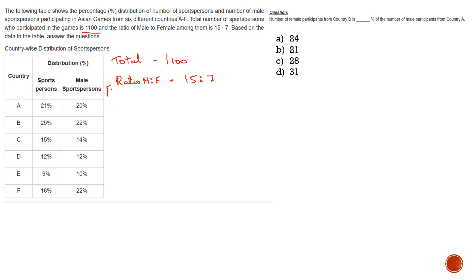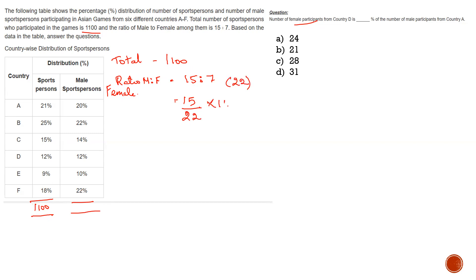We have to find out the female participants, because some questions involve female participants. First, before getting into female, we need to know the total number of participants is 1100, and find out the number of male participants from the ratio. The male participants share is 15 divided by the total share of 15 plus 7, which is 22, into 1100.